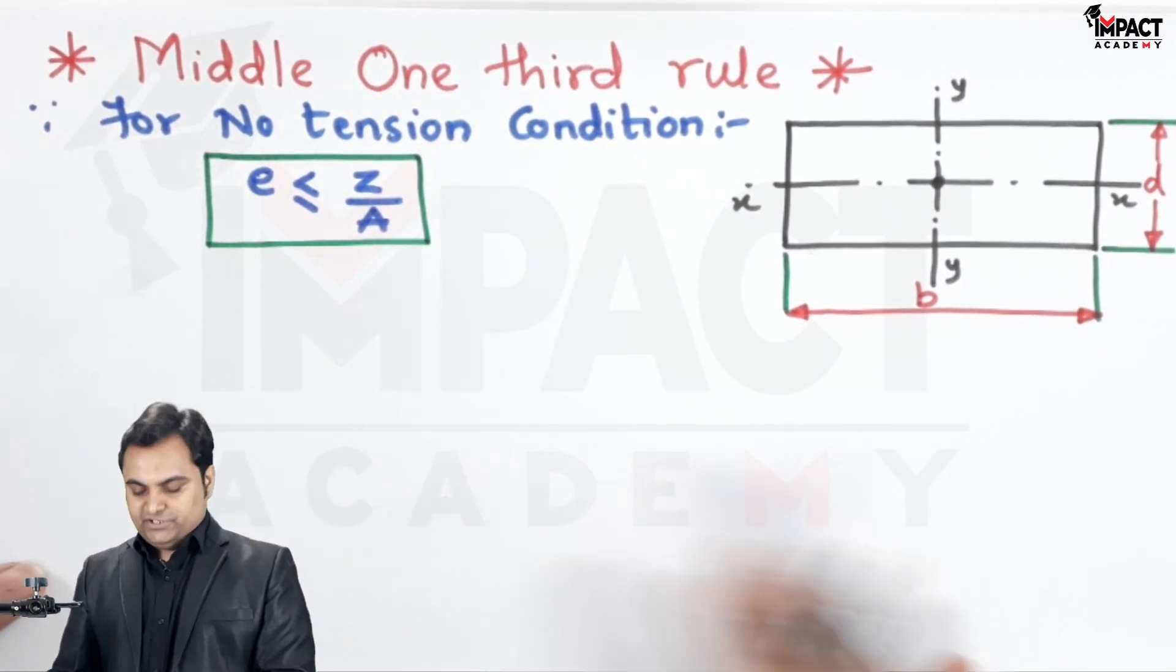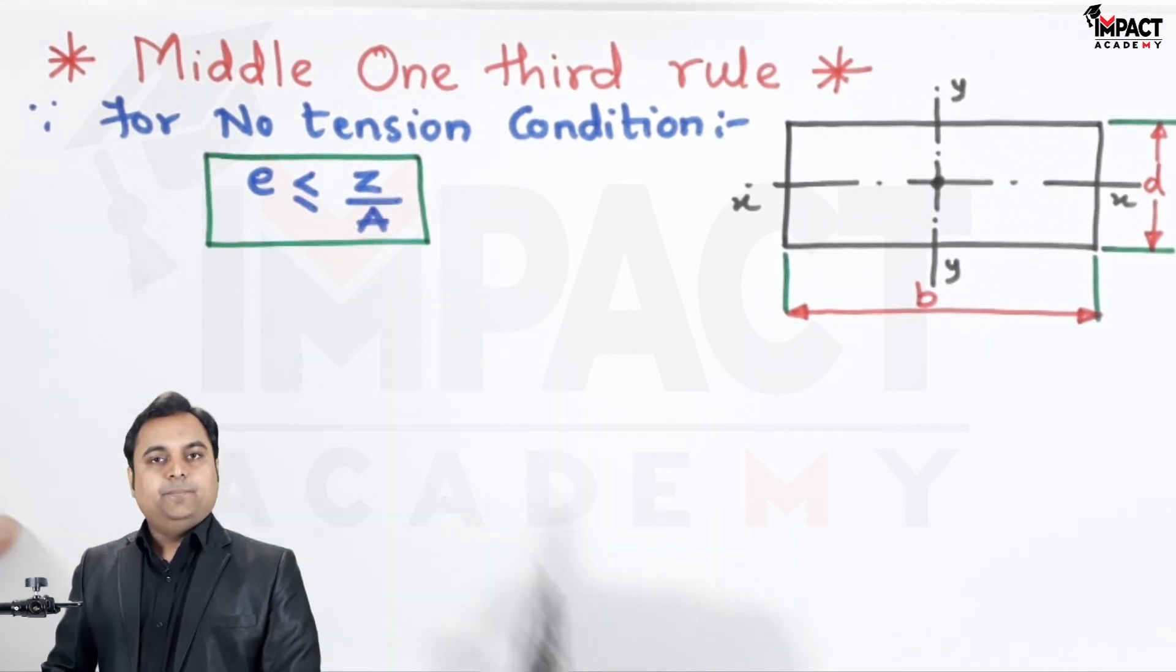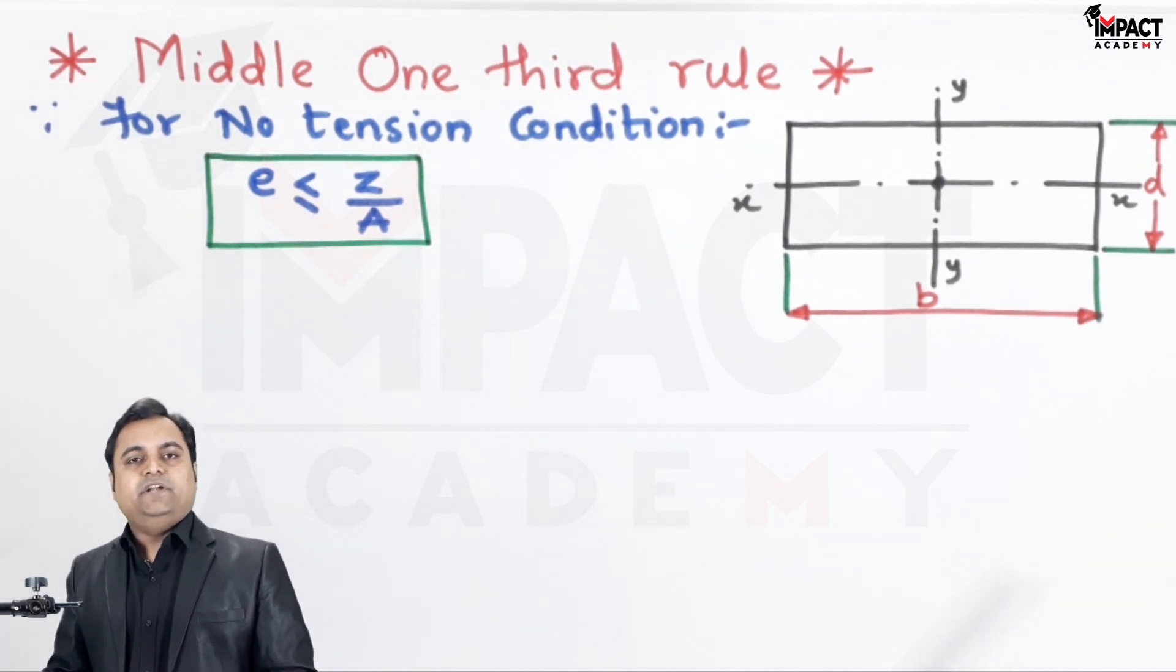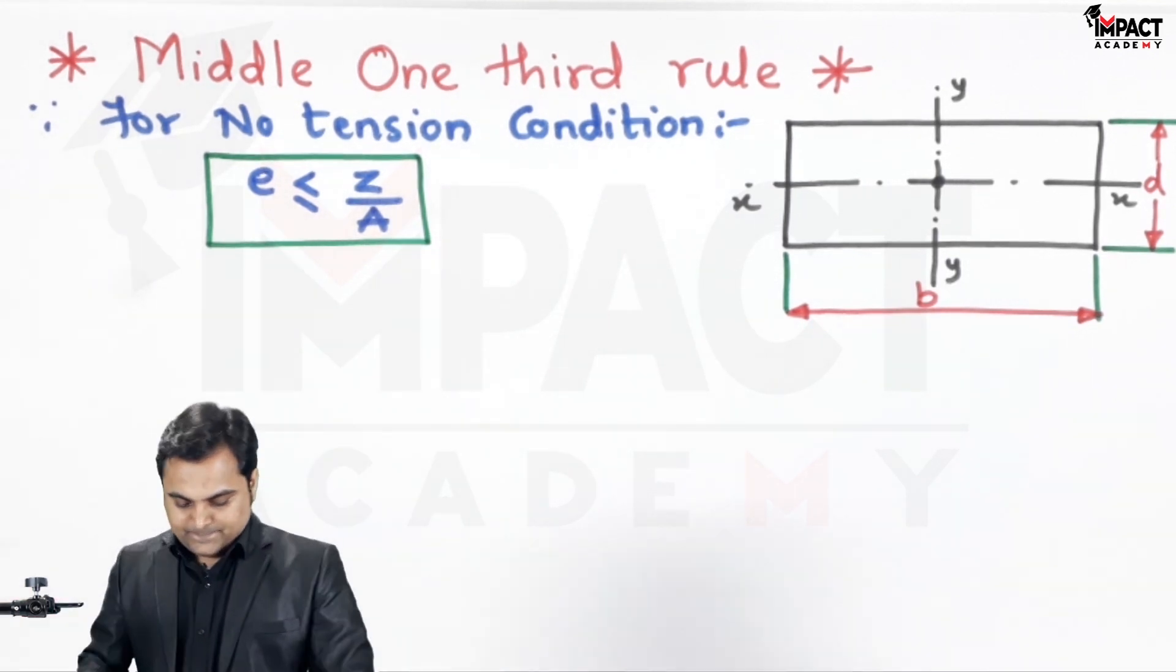Now this is the no tension condition, that is the eccentricity should be less than or equal to Z upon A. And how this relation comes, for that you can refer to my video in which I had explained the no tension condition. Now at first...